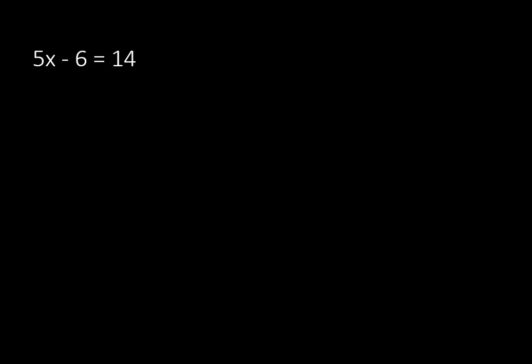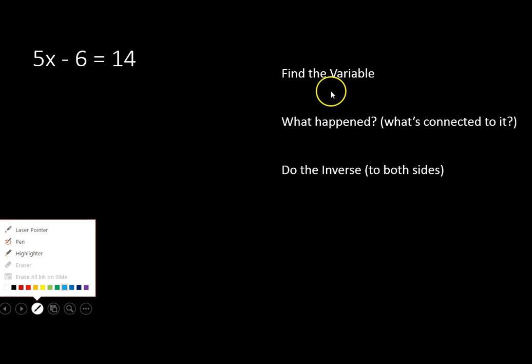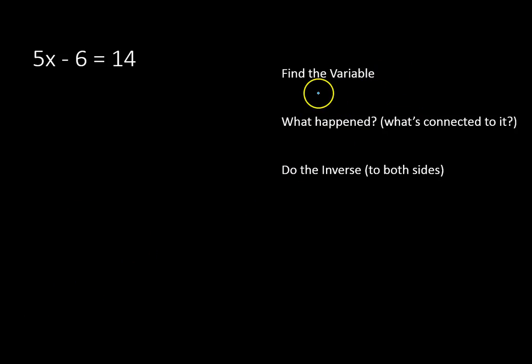We'll talk about how to do those. A two-step equation will look like this: 5x minus 6 equals 14. You can see that if you follow these steps, you'll be able to find your variable, just like we did before. Let's go ahead and find our variable. Our variable is x. It's right there.